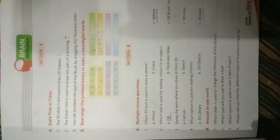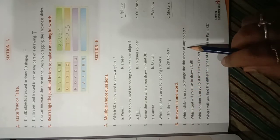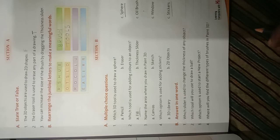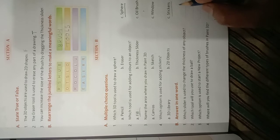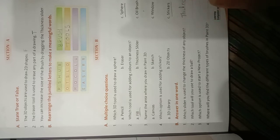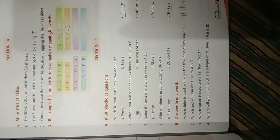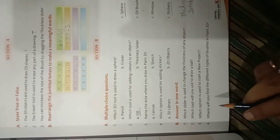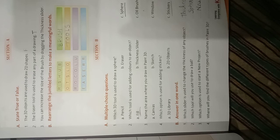Now let us go to the next section — answer in one word. Which slider is used to change the thickness of any object? If you want to change the thickness of any object, there is an option called thickness slider — T-H-I-C-K-N-E-S-S, thickness slider, S-L-I-D-E-R. Which tool will you use to draw a ball? If you want to draw a ball which should look like a real ball, you can use sphere. Which option is used to start a new project? The option is new. Where will you find the different types of brushes in Paint 3D? This you all have to do as homework.